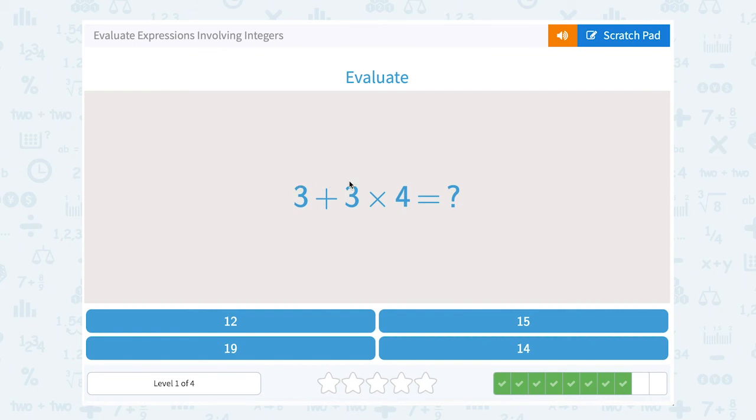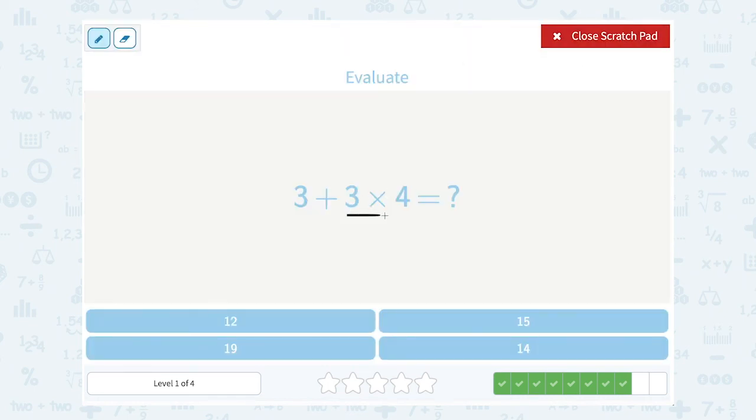3 plus 3 times 4. Okay, well I need to multiply before I can add, so I'm going to leave that 3 where it is, and I'm going to start by multiplying 3 times 4. 3 times 4 is 12. And then finally, I can add this together and say 3 plus 12 gives me 15.